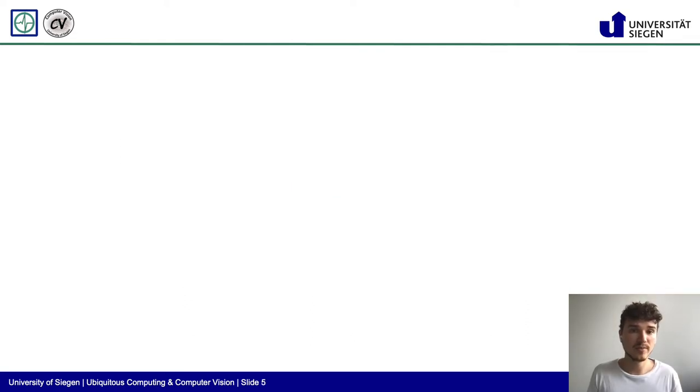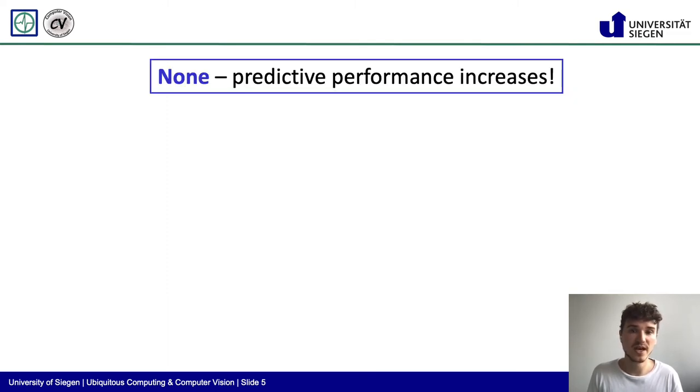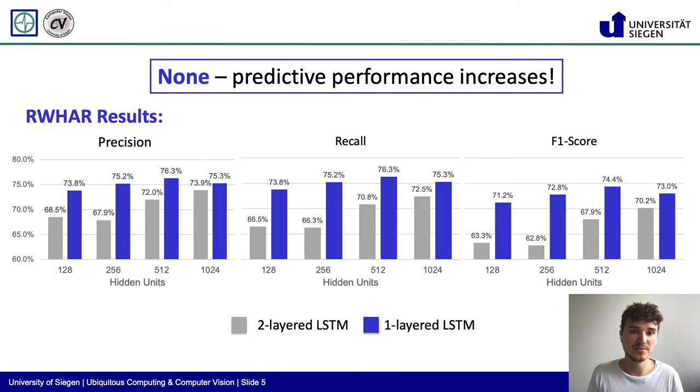So, to come back to the initial question, how much of a decrease in predictive performance does one need to account for when using our simpler architecture? The answer is none. The predicted performance actually increases. As one can see with sample results obtained from the real-world HAR dataset, using our simpler architecture, performance significantly increases as far as precision, recall, and F1 score is concerned.